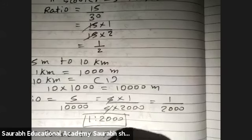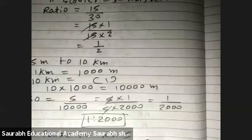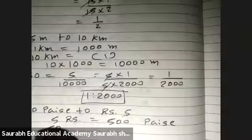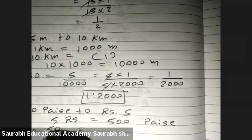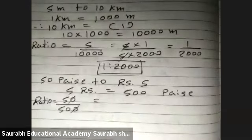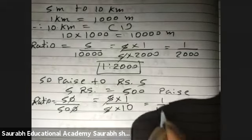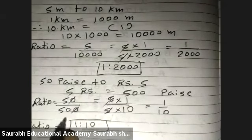C. 50 paise to 2 rupees 5. Now 500 rupees is equals to 500 paise. 1 rupee is equals to 100 paise. 5 rupees is equals to 500 paise. Therefore, 50 upon 500 paise. Ratio 50 upon 500. Cut. 5 ones are, 5 tens are. Cut. 1 upon 10. That is 1 is to 10. Ratio is equals to 1 is to 10.